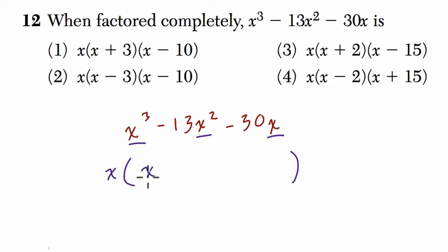Well, x times x squared, that's x to the third. Then minus 13x. If we take 13x and multiply it by x, we get 13x squared. And then finally, minus 30.